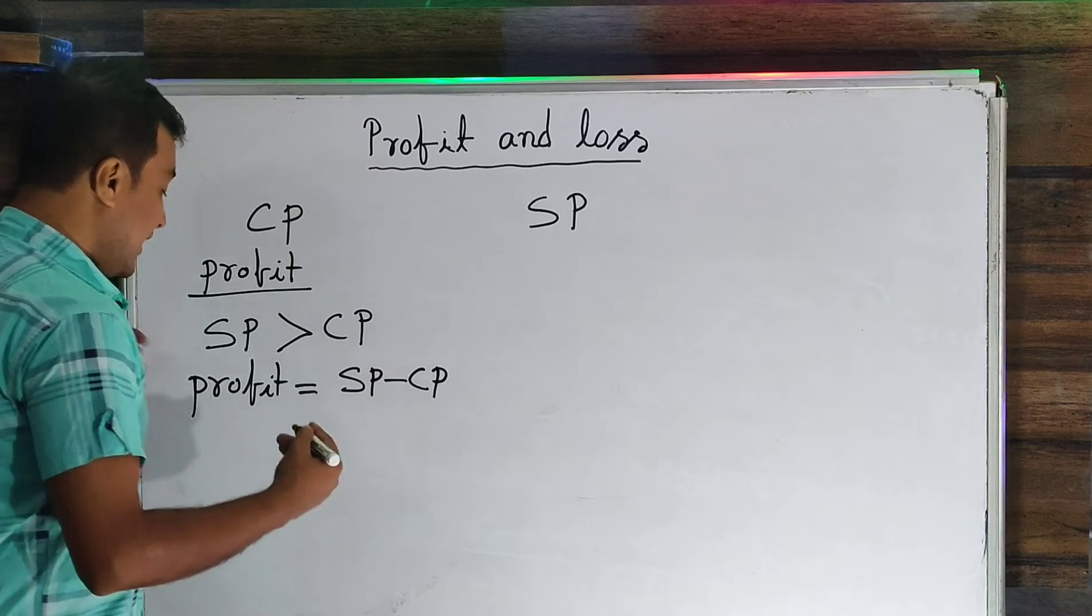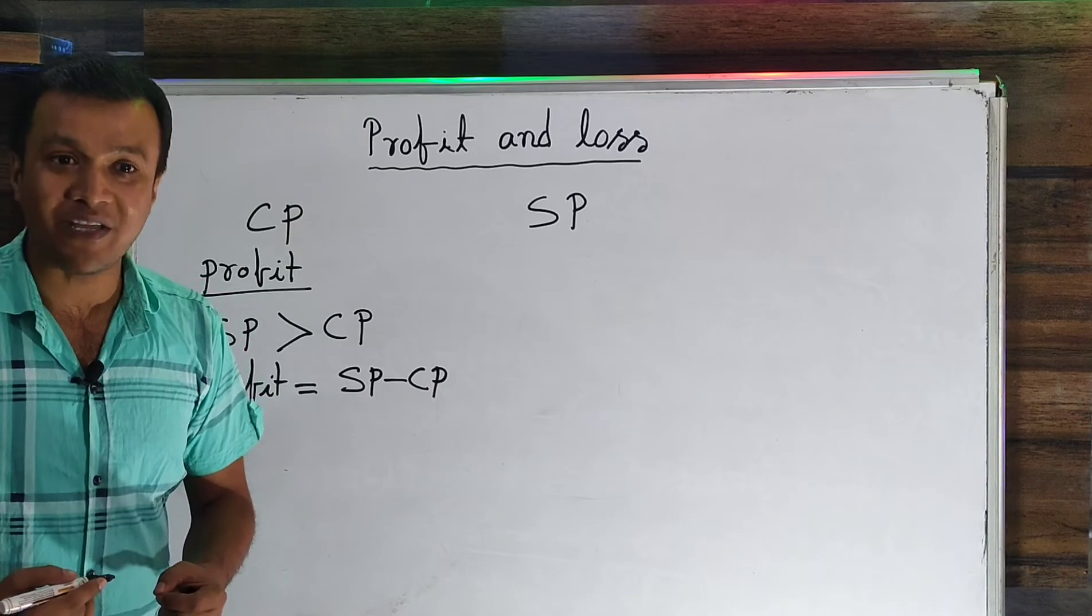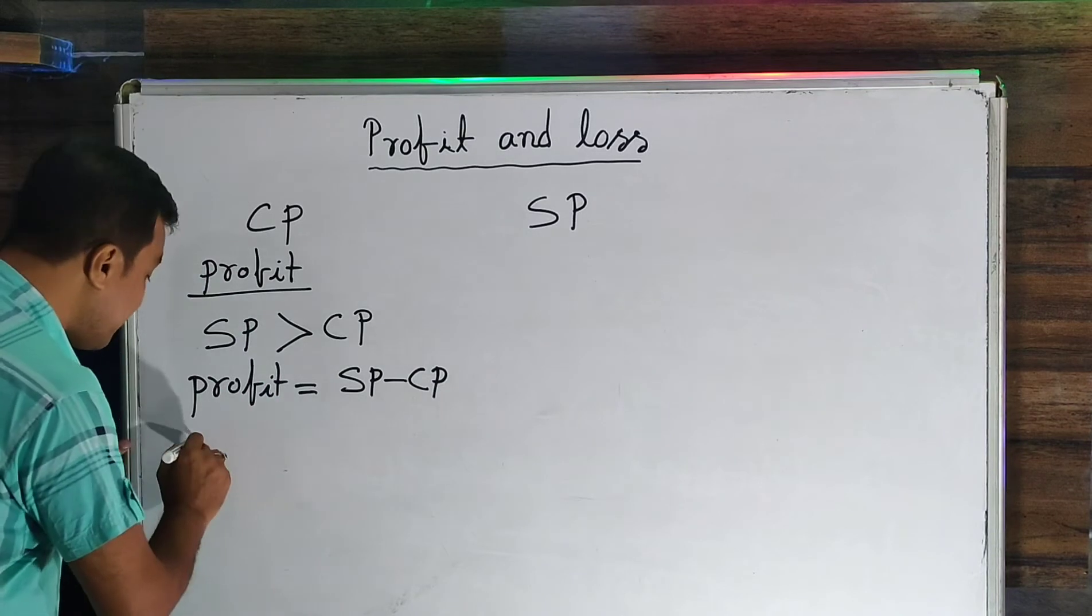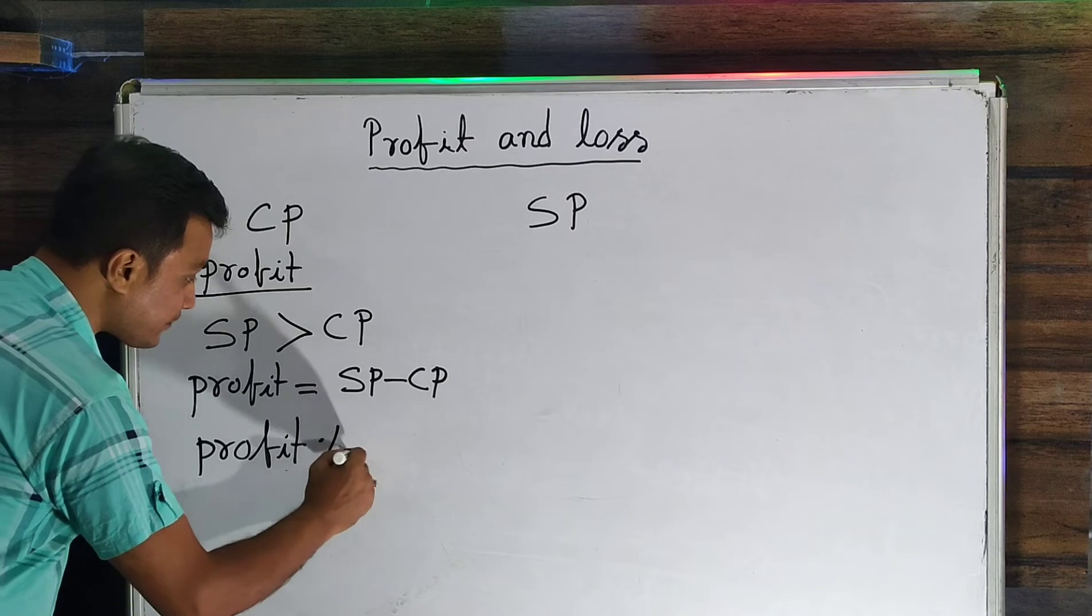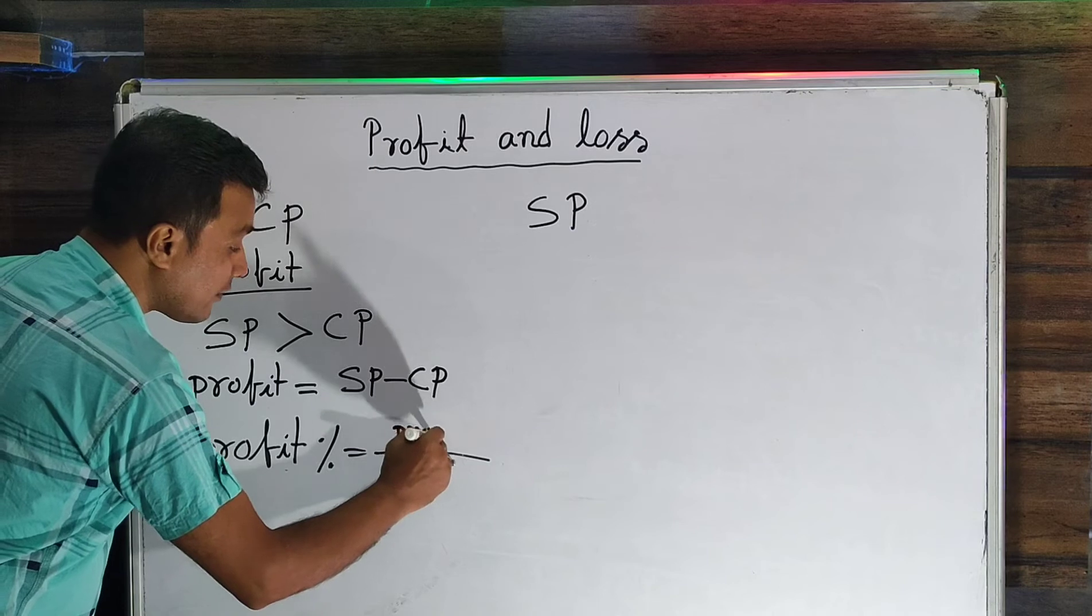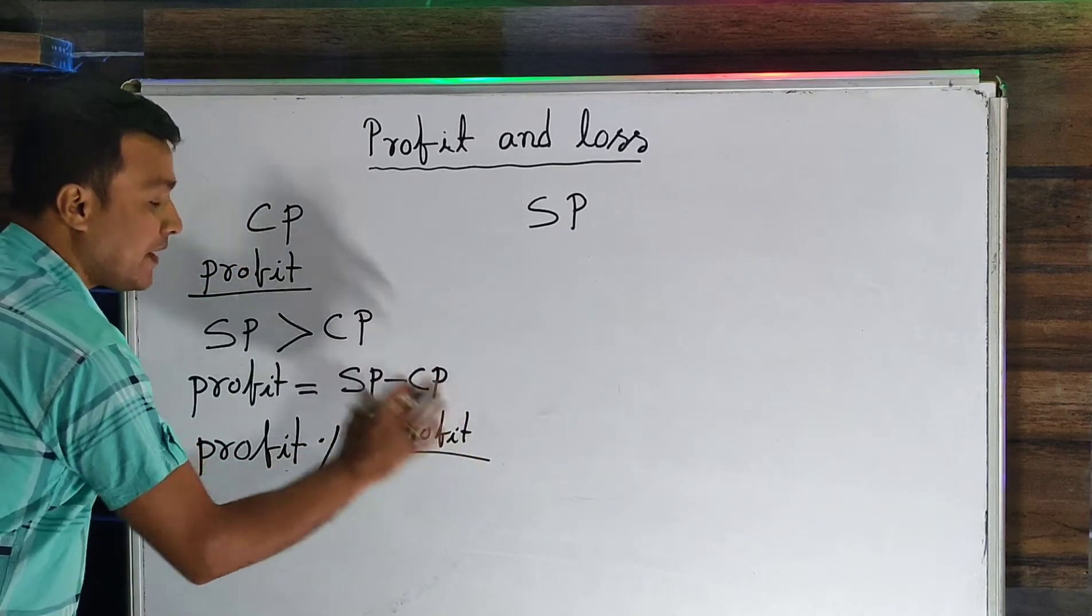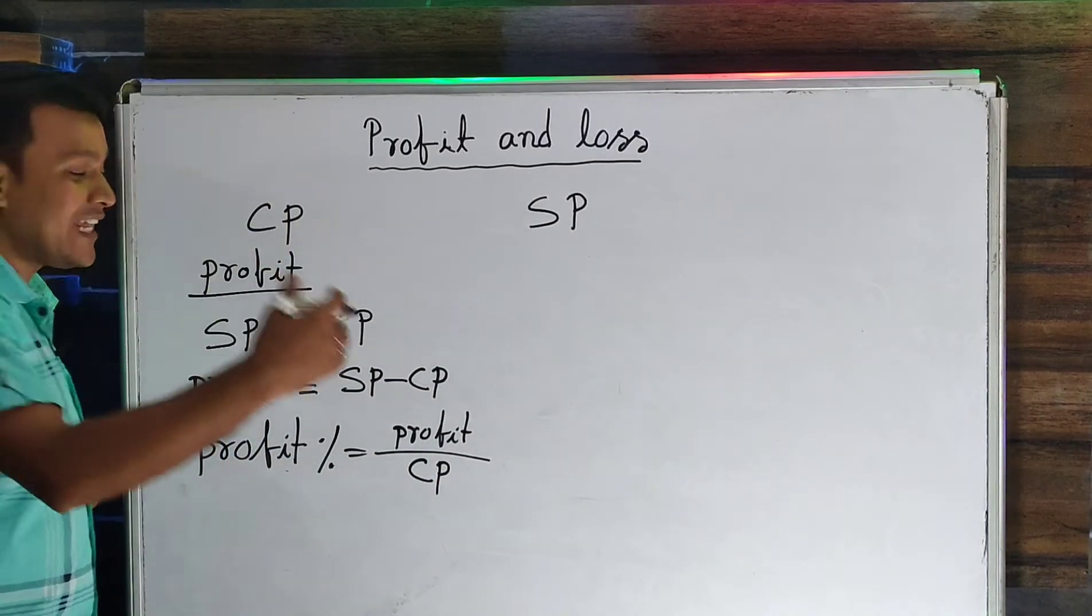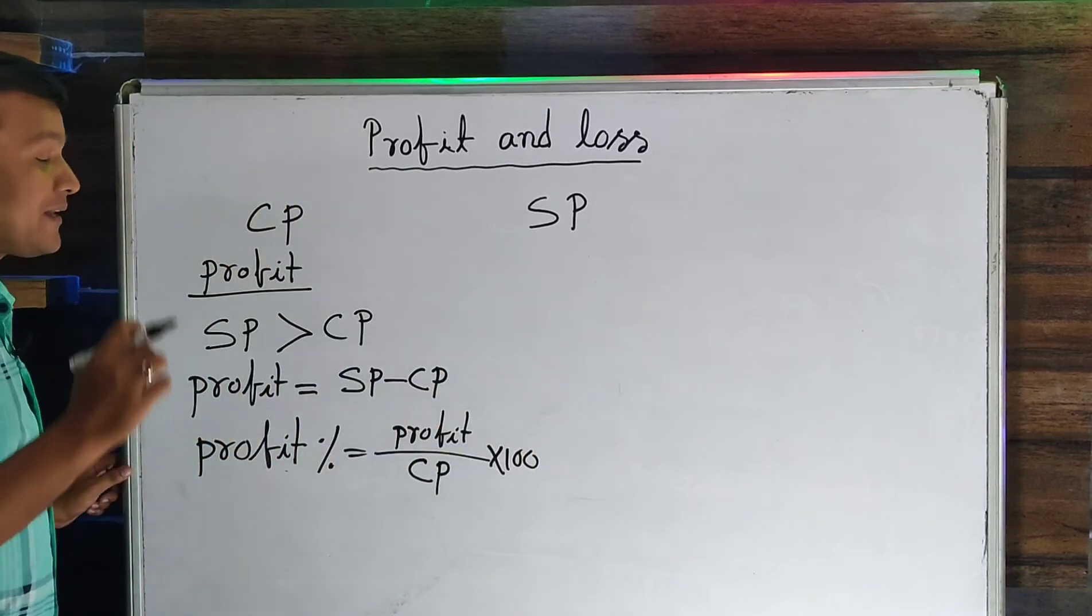This profit is done. Profit percentage is the profit amount divided by cost price. That means SP minus CP divided by cost price, and then we multiply by 100 because it's always a percentage.